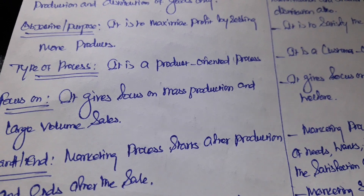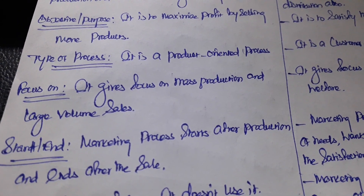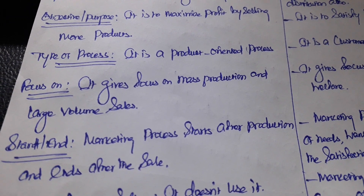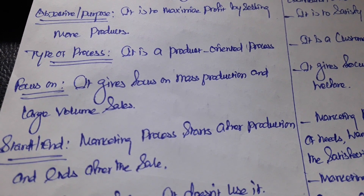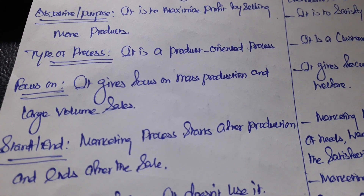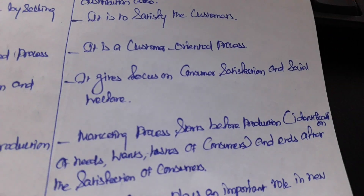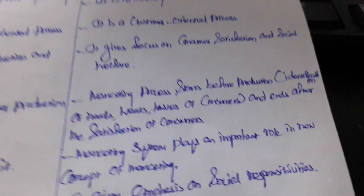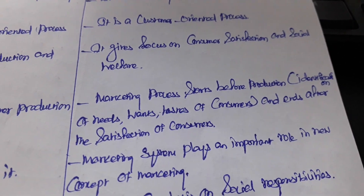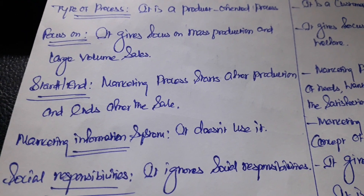In terms of type of process, the old concept is a product-oriented process. Its focus is on mass production and large volume sales — it focuses only on production and sales to earn more profits. The new concept gives focus on consumer satisfaction and social welfare.